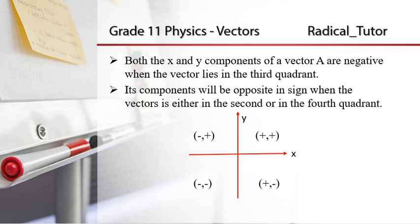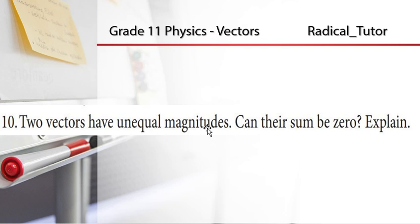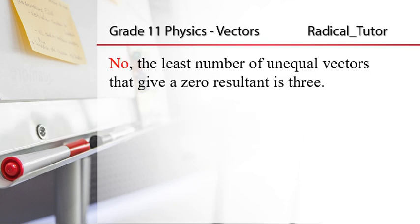Two vectors have unequal magnitudes. Can their resultant be zero? Explain. Mind you — unequal. If the magnitudes are equal, the answer is yes. But now again, can a vector with unequal magnitude equal zero? The number of unequal vectors that give zero resultant — until then, we will see.